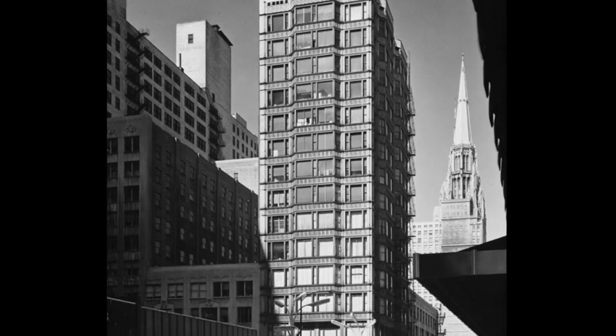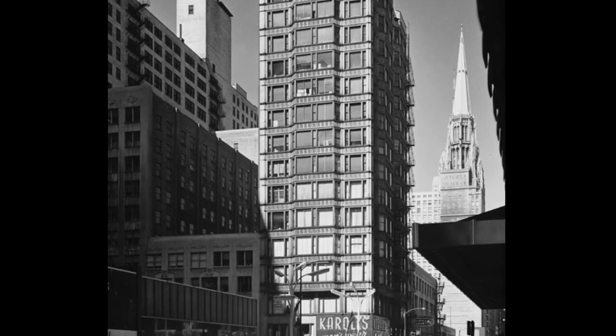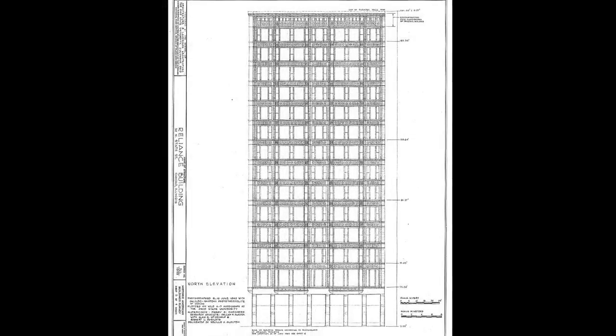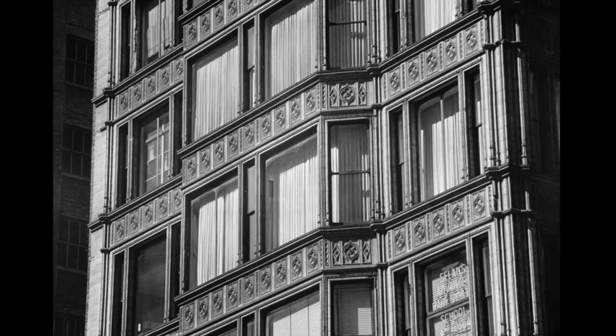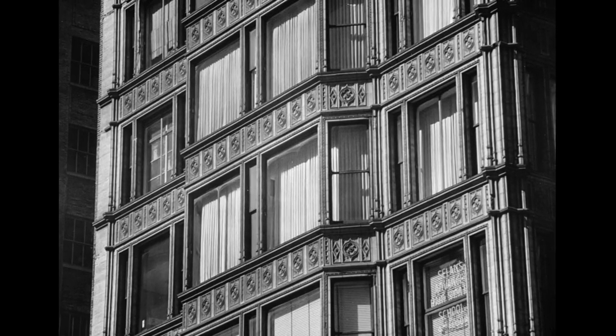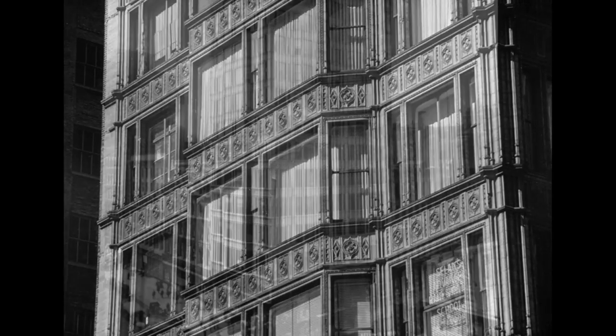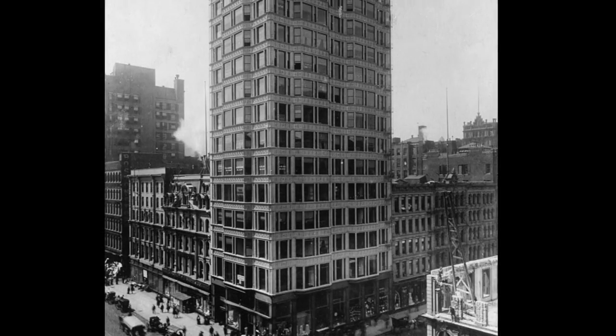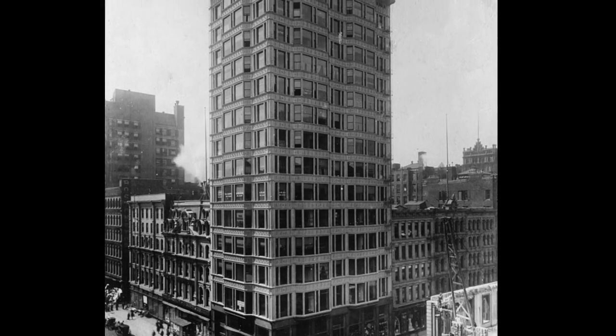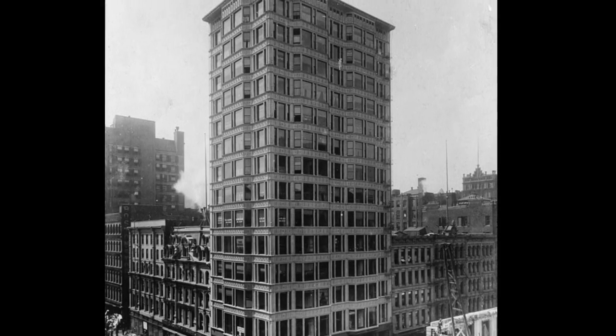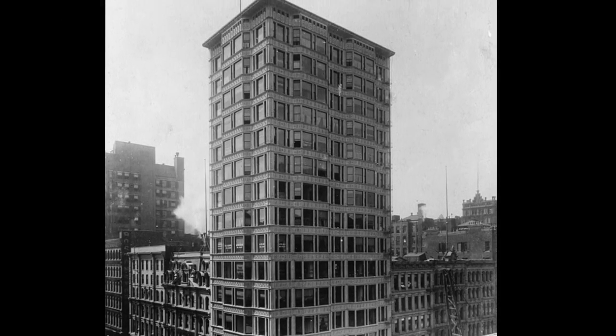Burnham and Root designed the Reliance Building in Chicago, completed in 1895. It's the first building of its kind to hang a thin skin made of terracotta and glass from a steel framework. This mode of construction is called curtain wall.